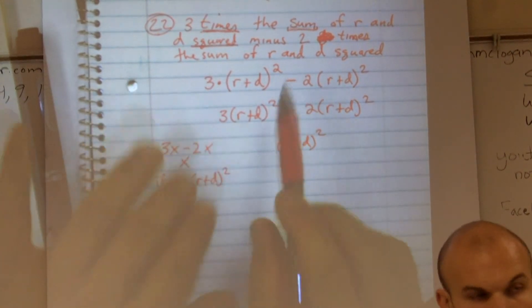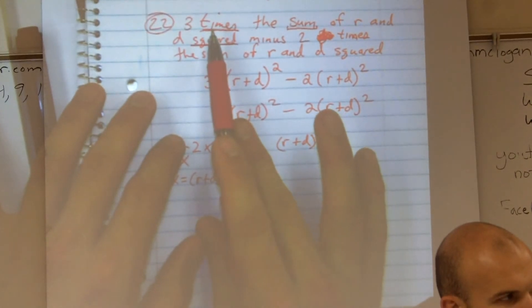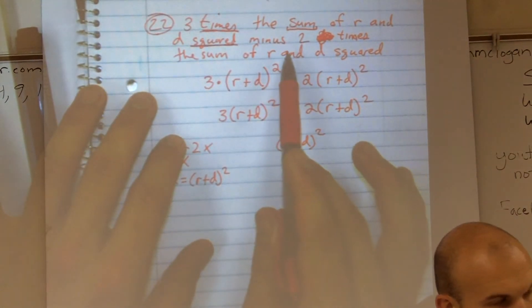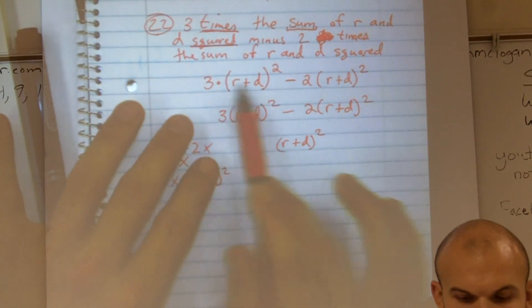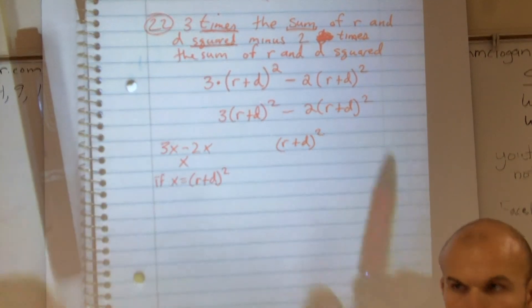So that is how you first translate a verbal expression to an algebraic expression. Then you must simplify. Okay?